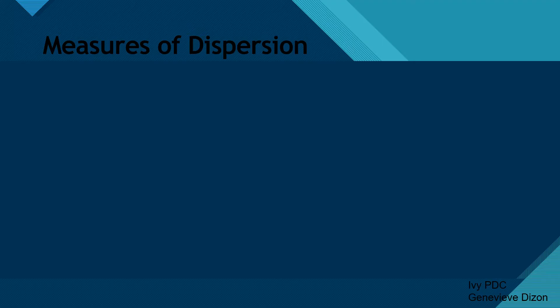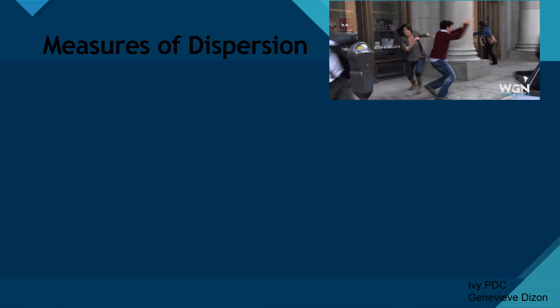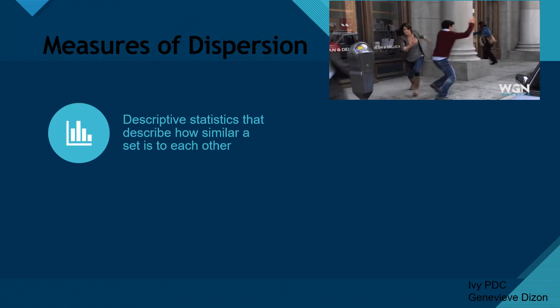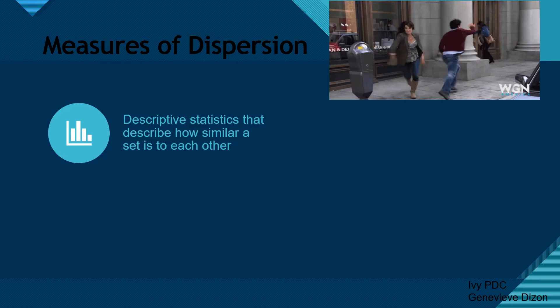Another recall topic would be measures of dispersion. This has been discussed during your biostatistics as well. Dispersion means it is a state of getting dispersed, spread out, or scattered. That means we are measuring whether numerical values are together or scattered from one another. In statistical dispersion, it describes how similar a set is to each other — we can see if the data is squeezed together or scattered from the mean.